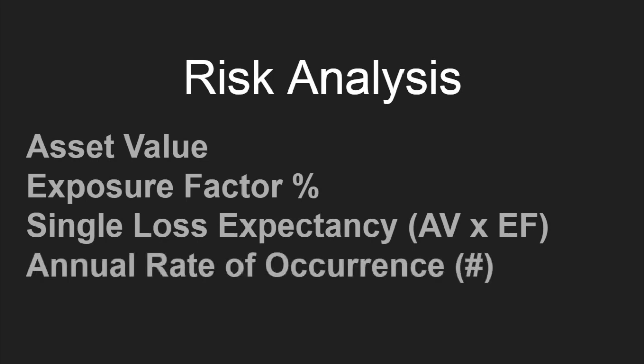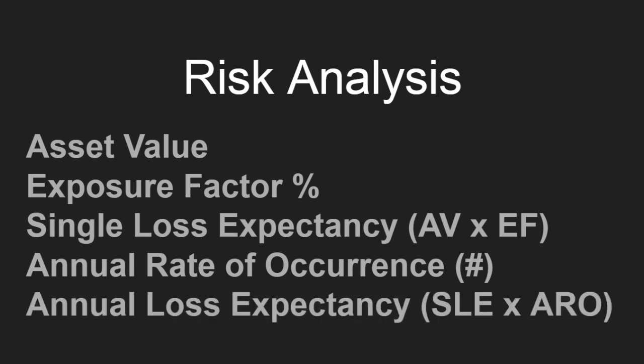The annual rate of occurrence (ARO) is how many times in a year the event occurs — typically a decimal, but it can be whole numbers. The annual loss expectancy (ALE) is the SLE times the ARO, which shows how much the business is currently losing without implementing safeguards. So if the safeguards are cheaper than the ALE, it's best to implement the safeguards.